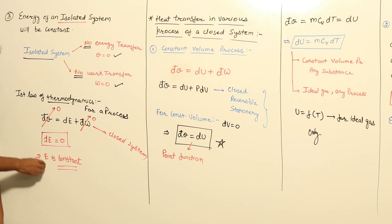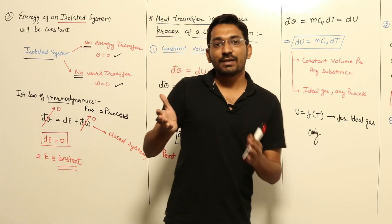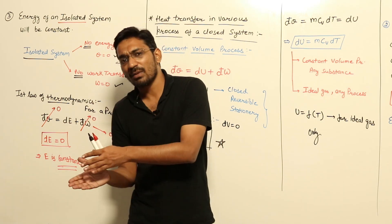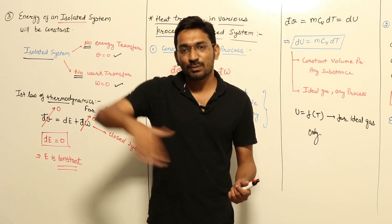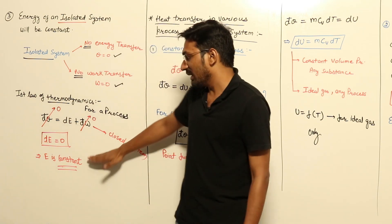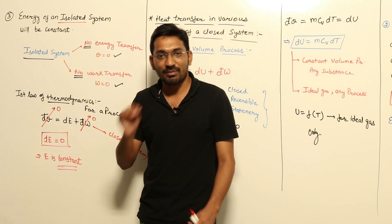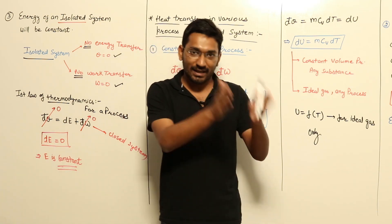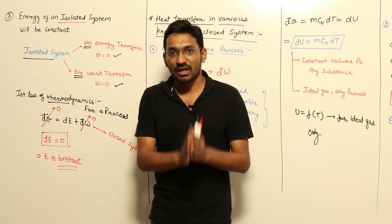If the change in energy is zero, it results in the energy of that system being constant. This is the total energy. Total energy remaining constant means the sum of macroscopic and microscopic energies will be constant. It may be the case that within the system one form of energy is converted into another form, but overall energy for that process will remain constant. This is the meaning of the first law: energy of an isolated system remains constant — not only internal energy, but total energy, meaning macroscopic plus microscopic. These three are the results of your first law of thermodynamics.